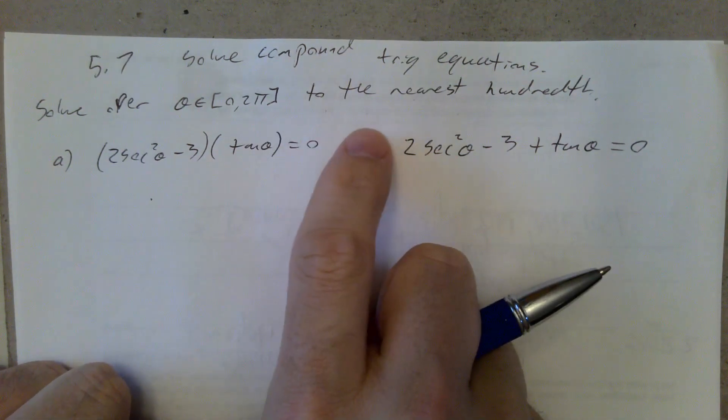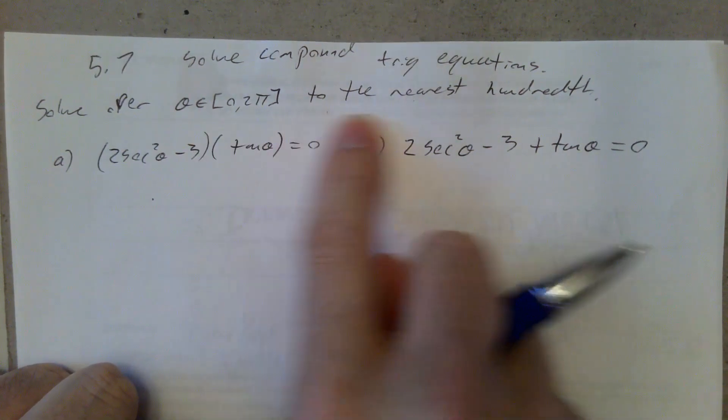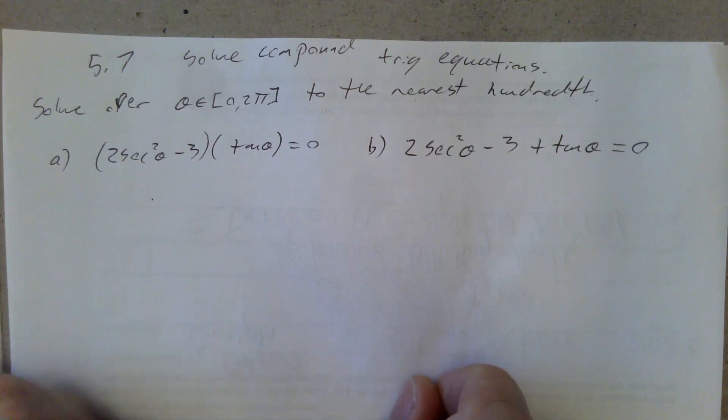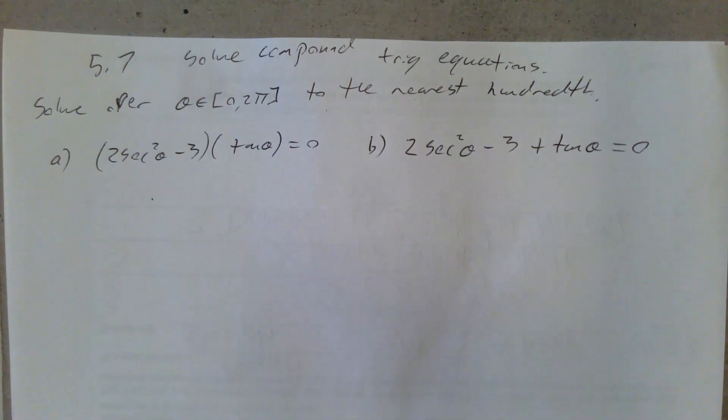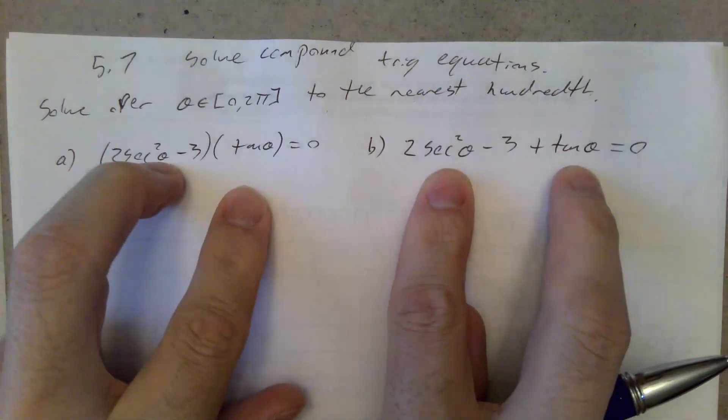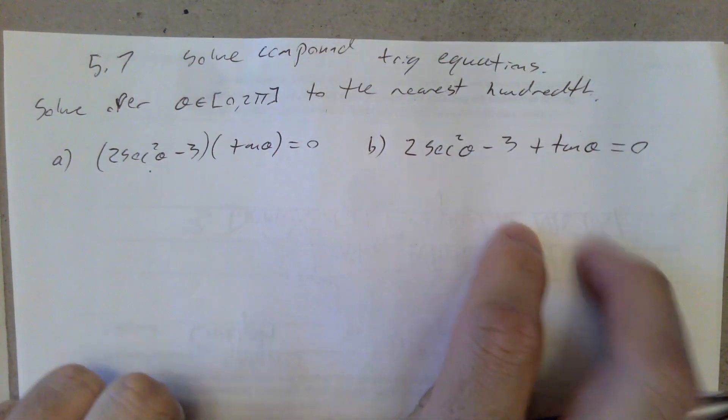We are solving from 0 to 2π to the nearest hundredth here. If necessary, we might, as always, if we recognize a ratio, we can get by without our calculator. I should get mine ready. So the big difference here, both of these equations have two different trig ratios in them, and that can sometimes cause a problem.